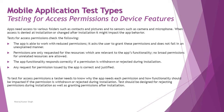Permissions should only be requested for resources relevant to the app's functionality — that's really important. Asking for unrelated app access may cause users to disable or uninstall your application. No broad permissions for unrelated resources are allowed. The app functionality should respond correctly if permission is withdrawn or rejected during installation, and any permission requests must be correct and justifiable to the user so they feel more trustworthy using the application. A tester needs to know why the app needs each permission and how functionality should be impacted if it is withdrawn or rejected during or after installation.